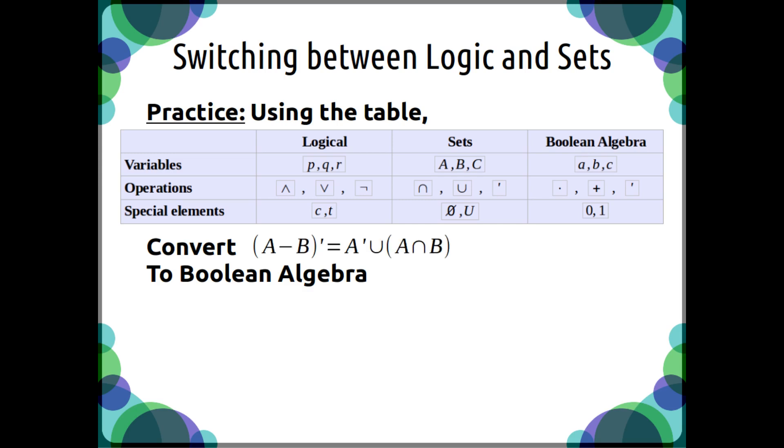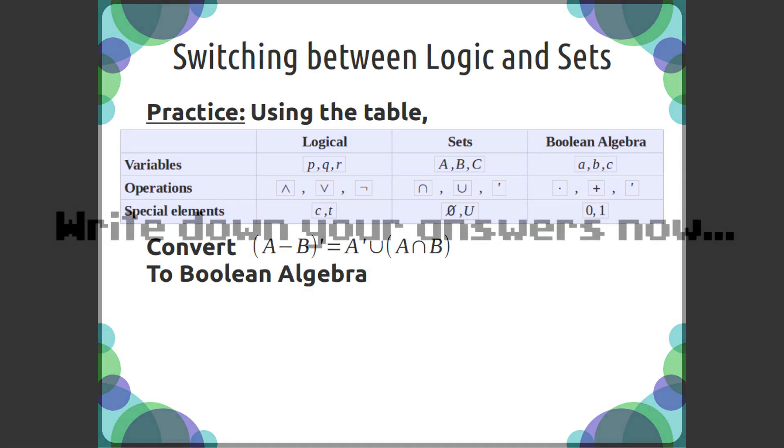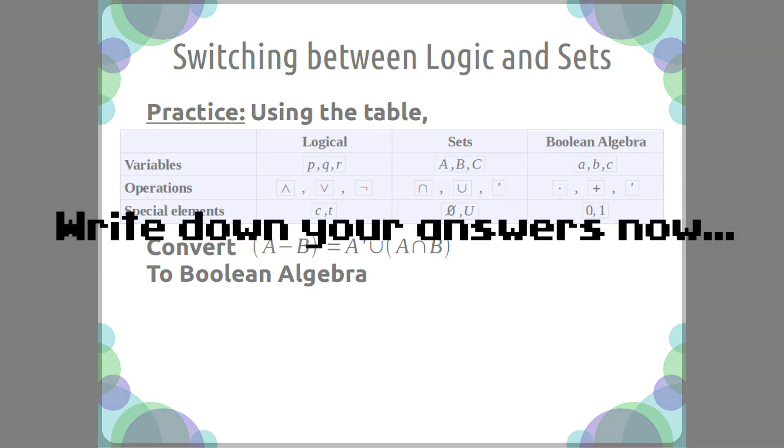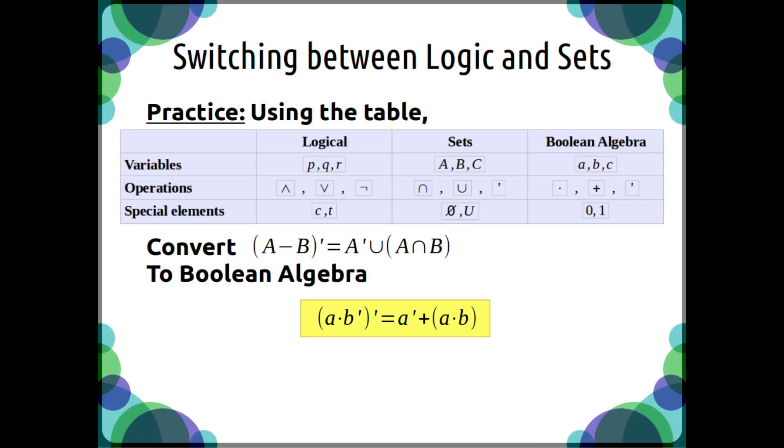Now convert this from set notation to Boolean algebra. And here's this result. Notice how we're converting A minus B in set notation to Boolean algebra with A times B prime.